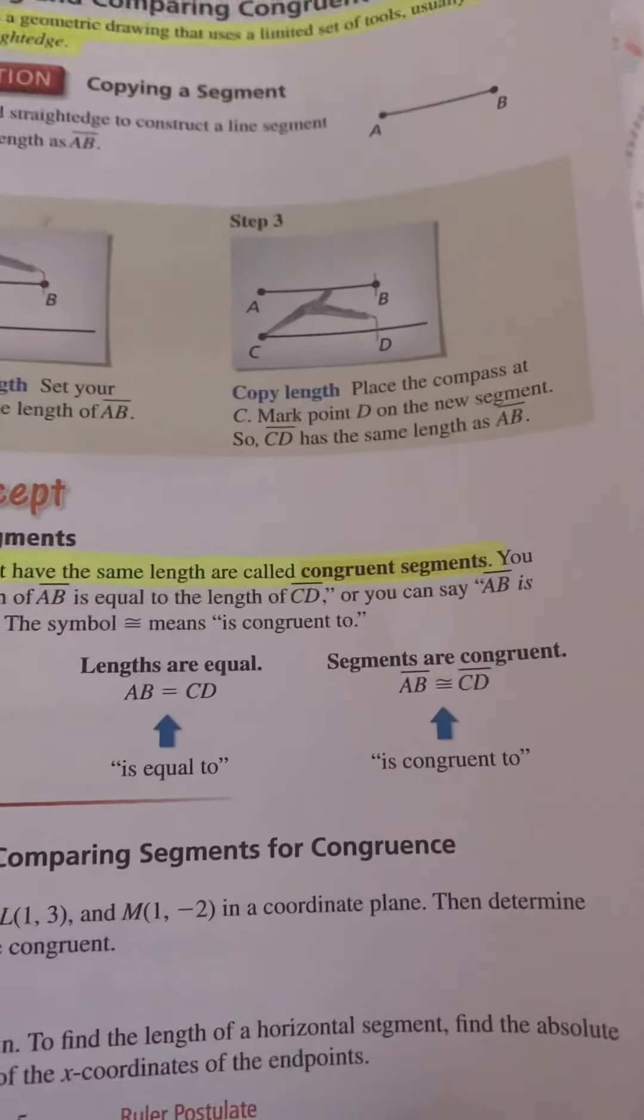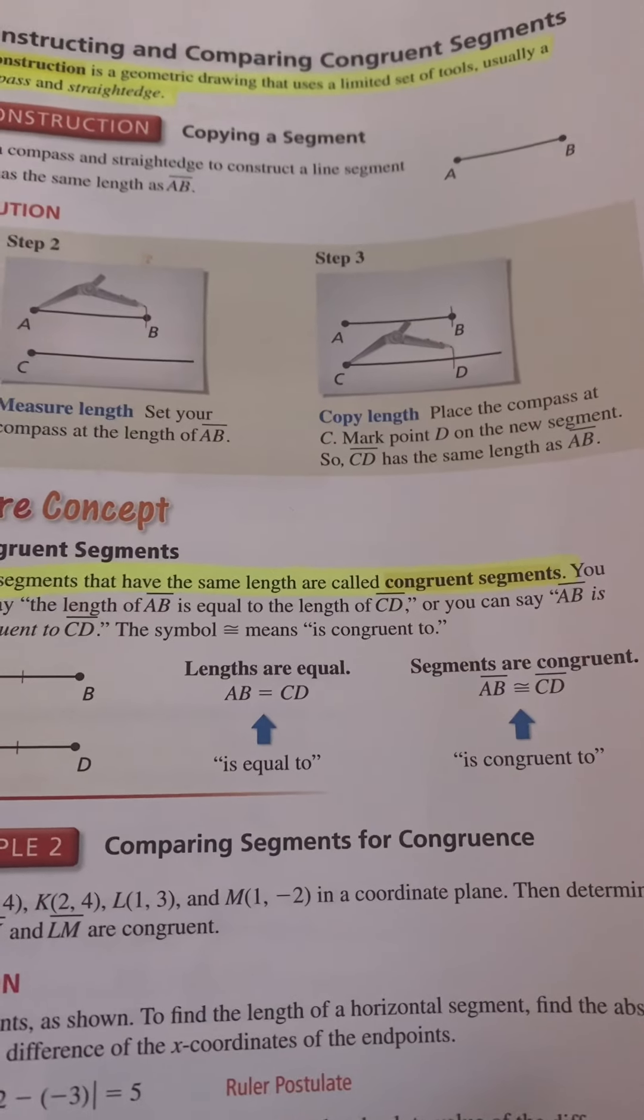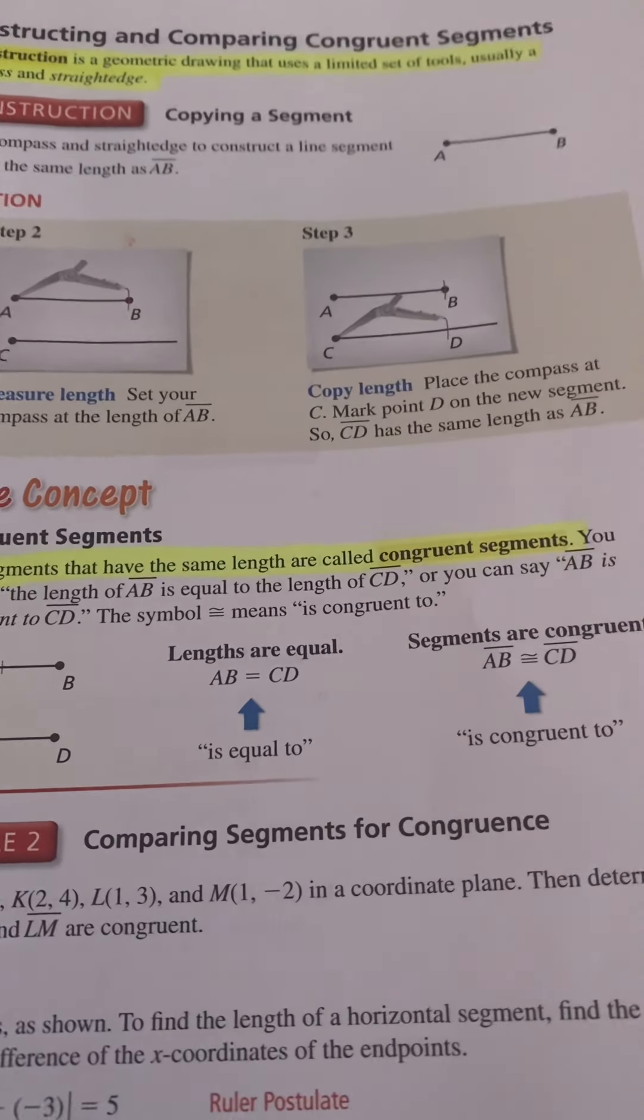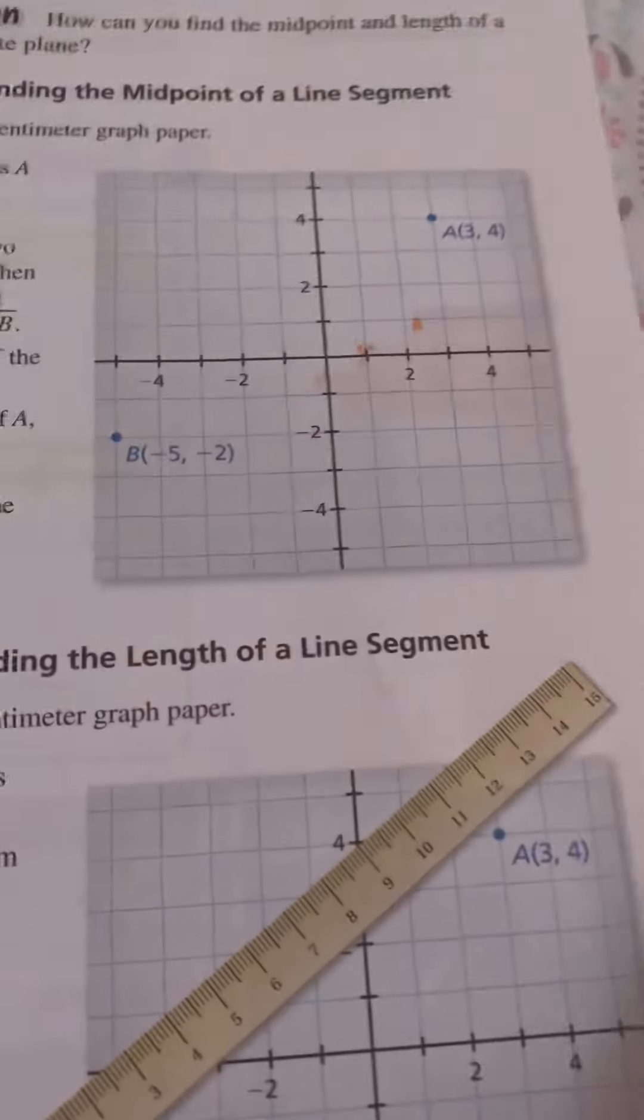Reading: In the diagram, the red tick marks indicate that line segment AB is equal to line segment C. When there is more than one pair of congruent segments, use multiple tick marks.